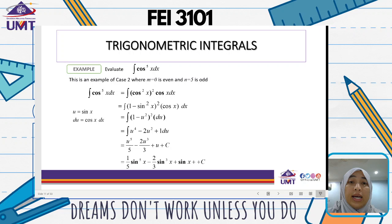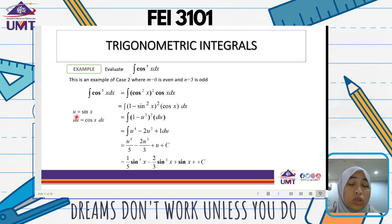Don't forget to substitute 1 minus sin squared x — this comes from trigonometric identities. So we have 1 minus sin squared x to the power of 2 times cos x dx. Now substitute u equals sin x, so du equals cos x dx. Replace cos x dx with du and sin squared x with u squared, giving 1 minus u squared to the power of 2 du. Expand this equation — you'll get u to the power of 4 minus 2u squared plus 1.